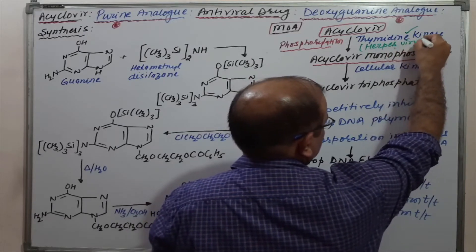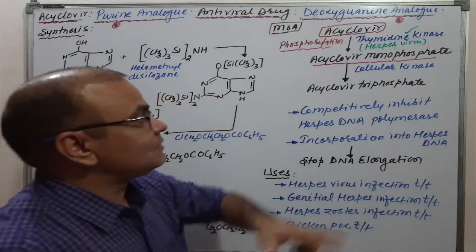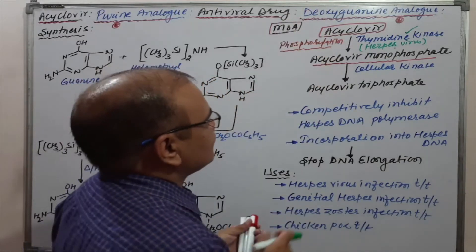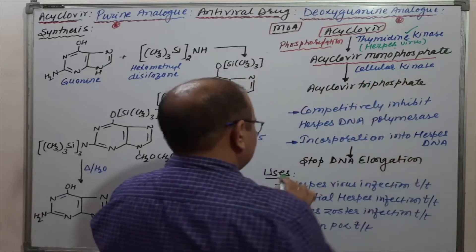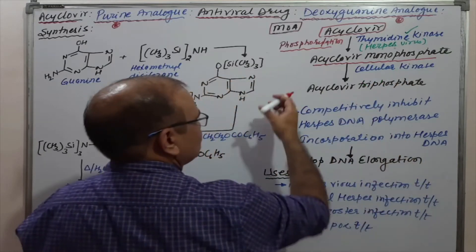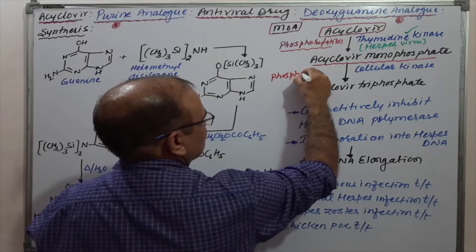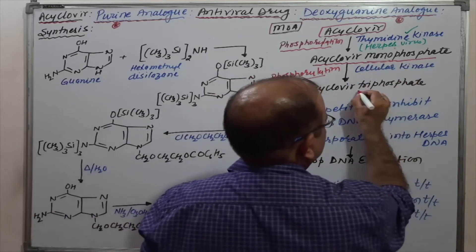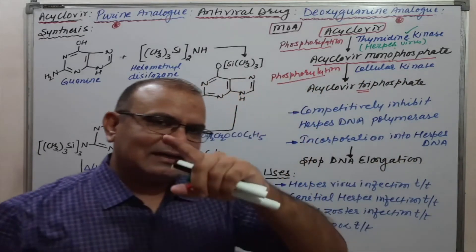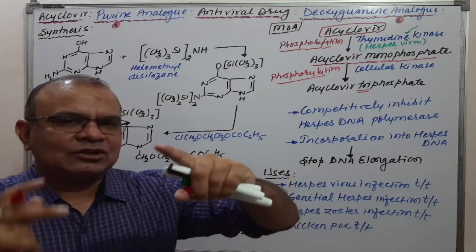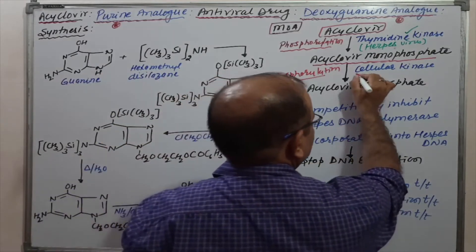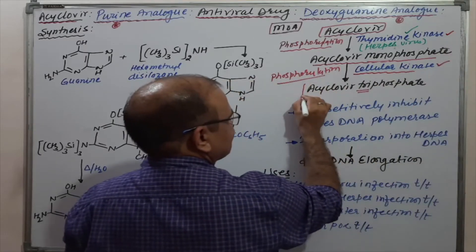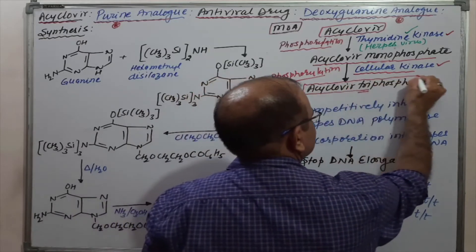The herpes virus enzyme converts acyclovir to acyclovir monophosphate. Then acyclovir monophosphate undergoes further phosphorylation — again the attachment of a phosphate group — going from monophosphate to triphosphate, meaning the addition of two more phosphate groups. This step is carried out by cellular kinase.